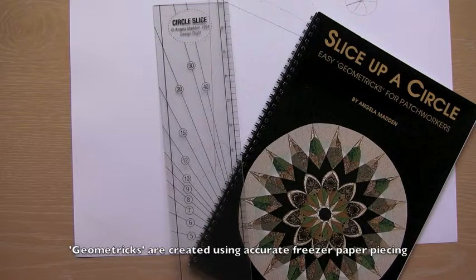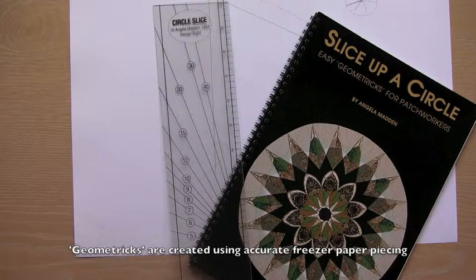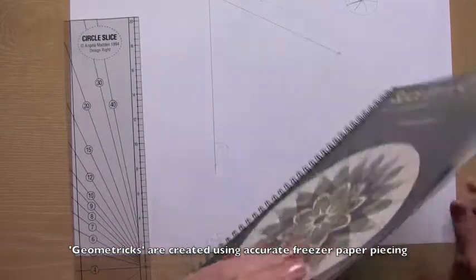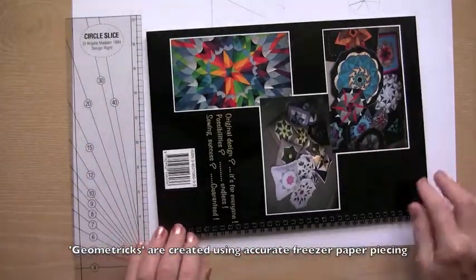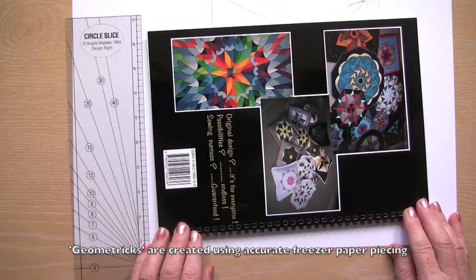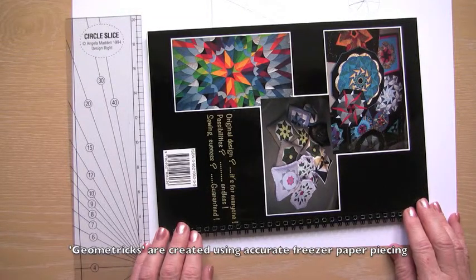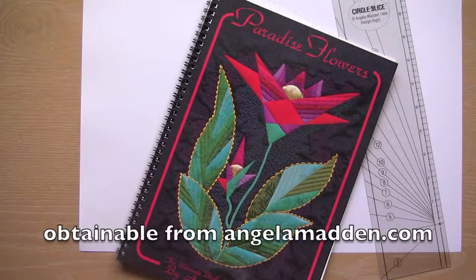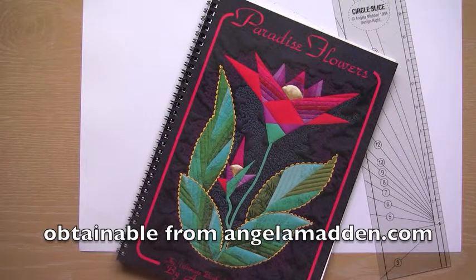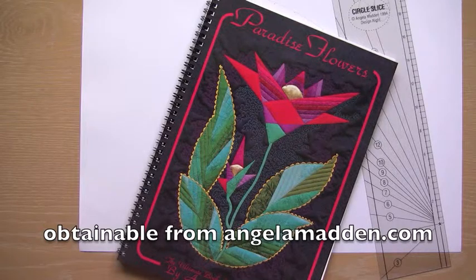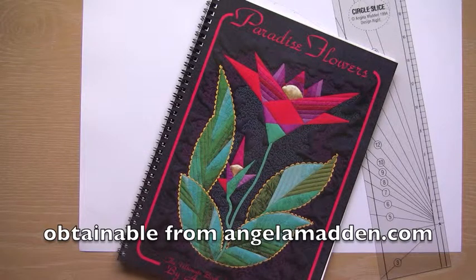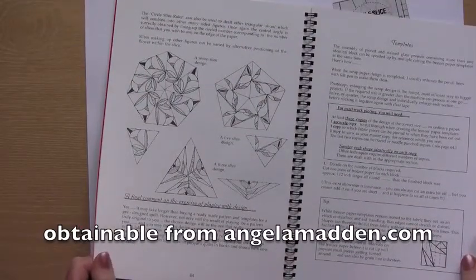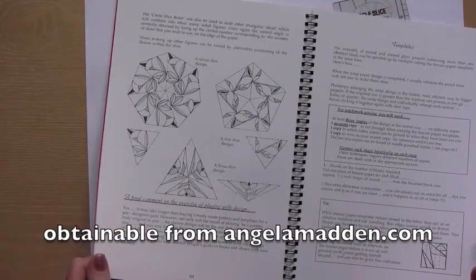Full instructions for all the techniques you can use the circle slice ruler for are found in this book Slice Up a Circle. There are lots and lots of different looks and they're all created with this little ruler simply and easily. The circle slice can also be used with this book Paradise Flowers. Although it isn't necessary for the basic design technique to create the flowers it takes the technique into different directions and so you can create circular designs that are original as well.